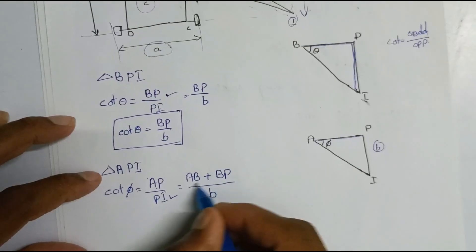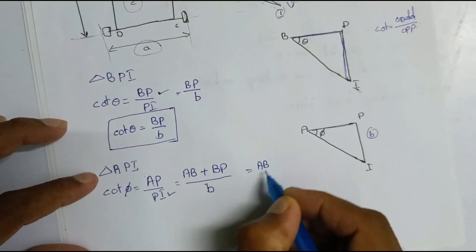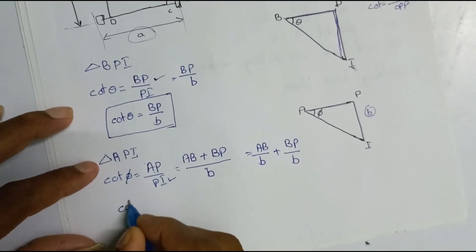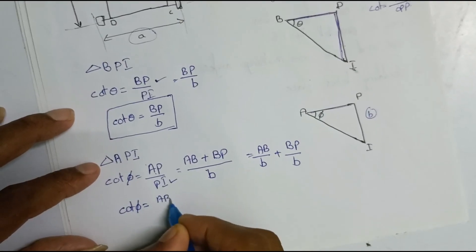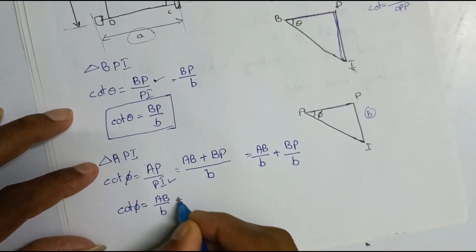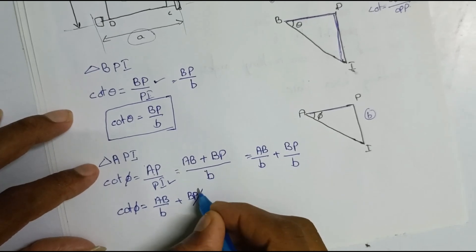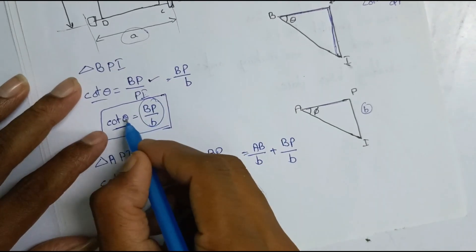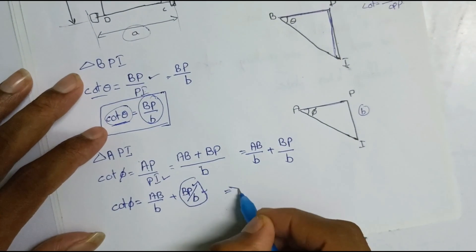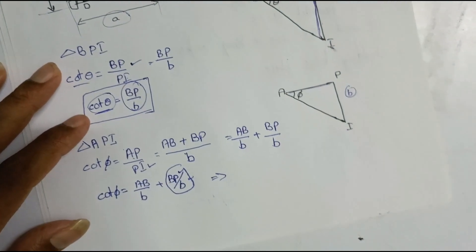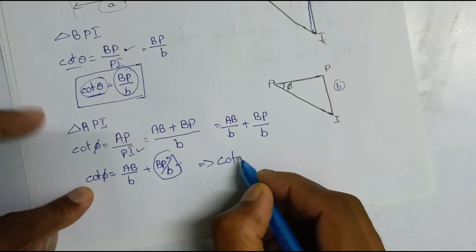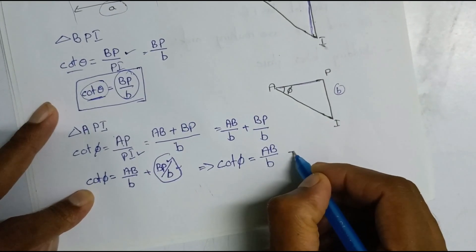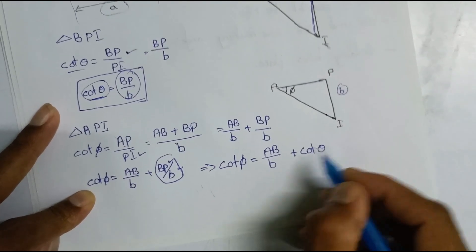I am going to separate and split. A B by B plus B P by B. Cot phi is equal to A B by B plus B P by B. B P by B is cot theta.